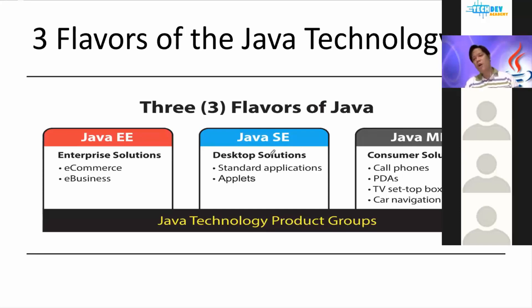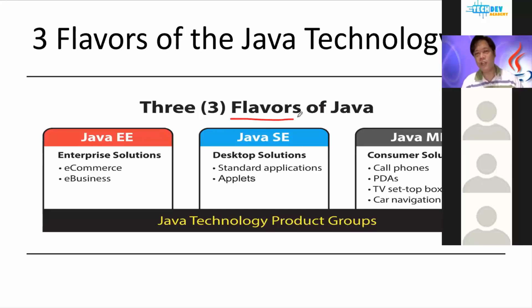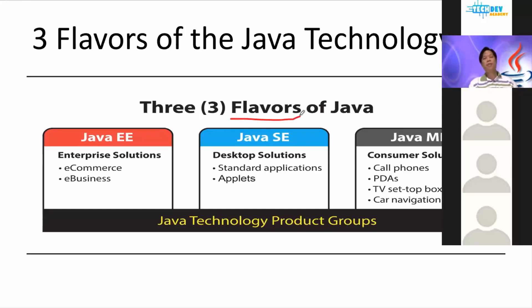There are three technology product groups for Java. I'd like to call them flavors of Java. Since we like to drink coffee, let's talk about the three flavors of Java.